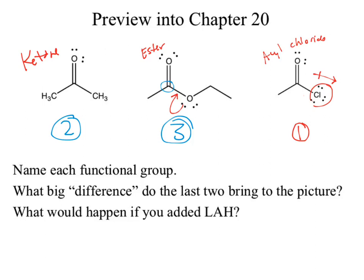What could we classify both the oxygen and the chloride as? Leaving groups. What does the ketone not have? A leaving group — which means all we can do is add to the ketone or aldehyde. If we add to an ester, we also have to potentially worry about something leaving. When we move into chapter 20, the mechanism is known as nucleophilic addition-elimination, which appears to be a substitution reaction.